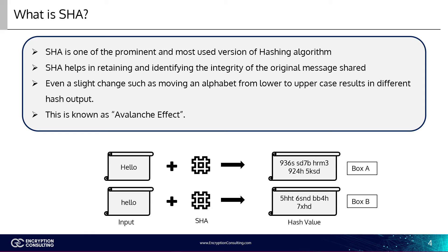In the next row, there's a minor modification in the message where 'H' is changed from uppercase to lowercase. However, you can see the change in the output hash, as mentioned in box B. This is referred to as the avalanche effect. This effect is important in cryptography, as it means even the slightest change in the input message completely changes the output. This will stop attackers from being able to understand what the hash digest originally said, and tells the receiver whether or not the message has been changed while in transit.